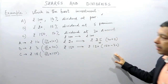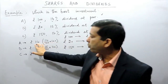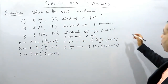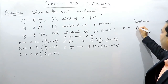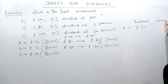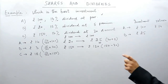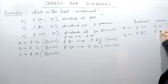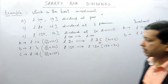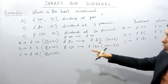Shareholder A invests rupees 100 and gets back rupees 14 as dividend in one year. So for A, the investment is rupees 100 and the return is rupees 14. In case of B, the investment is rupees 25 because the share is bought at rupees 5 premium, and the return is rupees 3. In case of C, the investment is rupees 120 and the return is rupees 18.